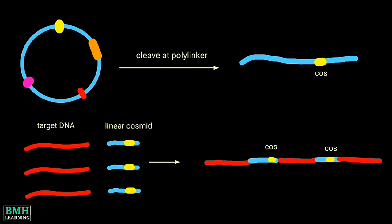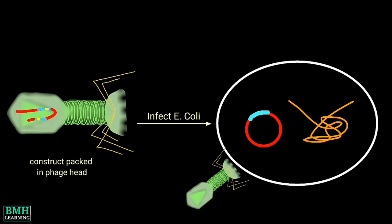The cosmid vector now cloned with the gene of interest is packaged into the phage heads. After the construction of recombinant lambda or cosmid libraries, the total DNA is transferred into an appropriate E. coli host.